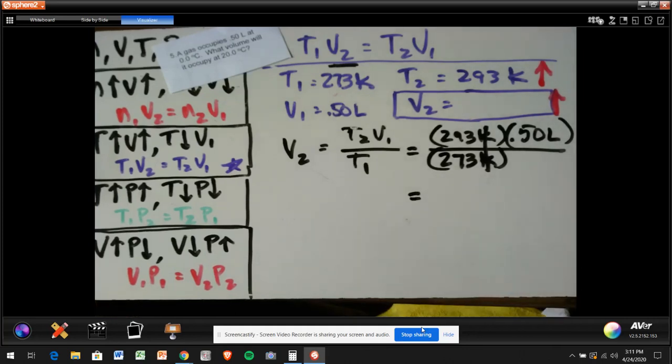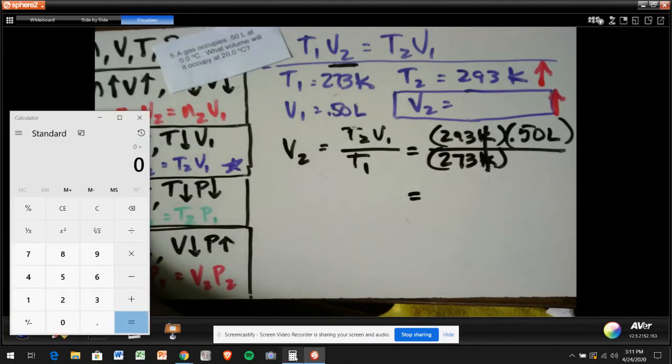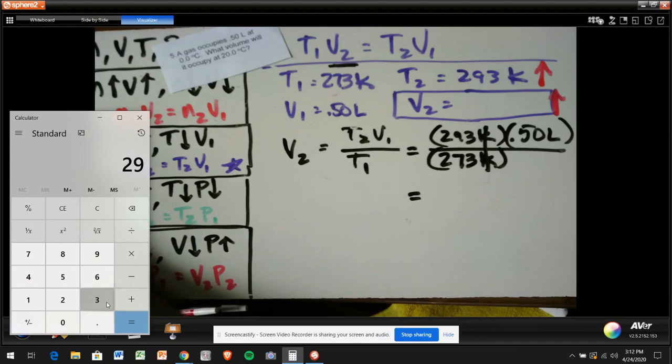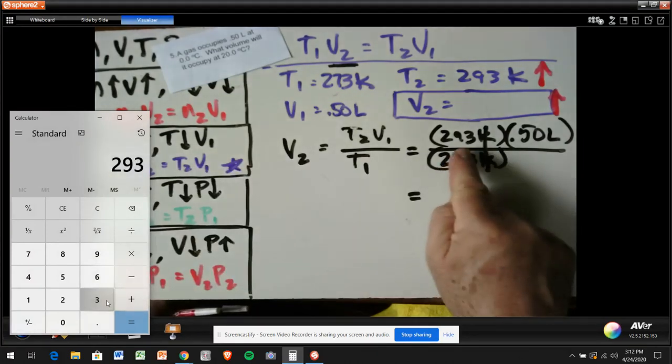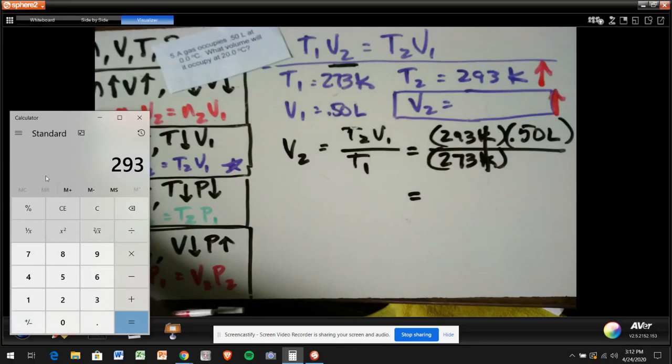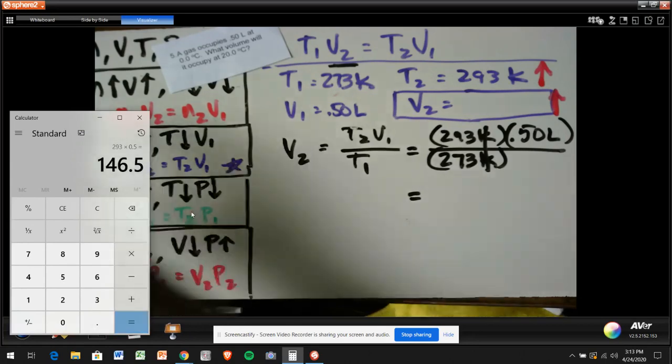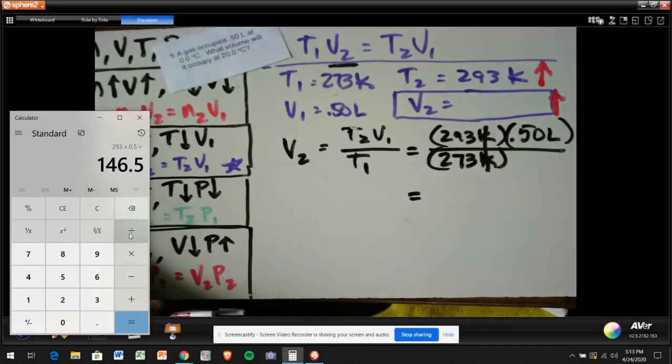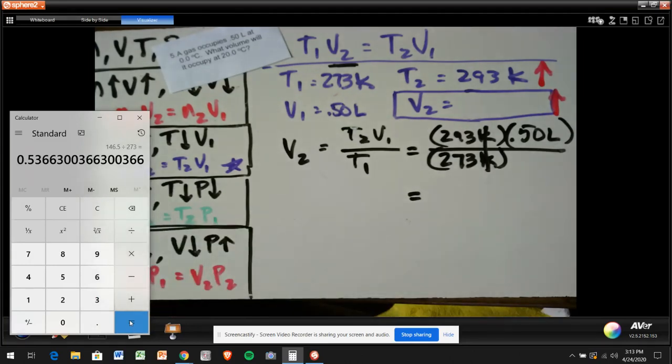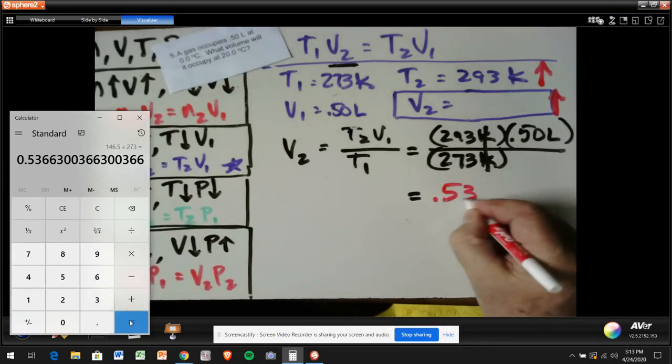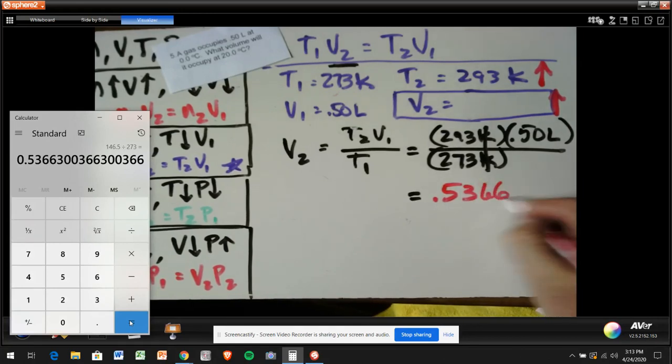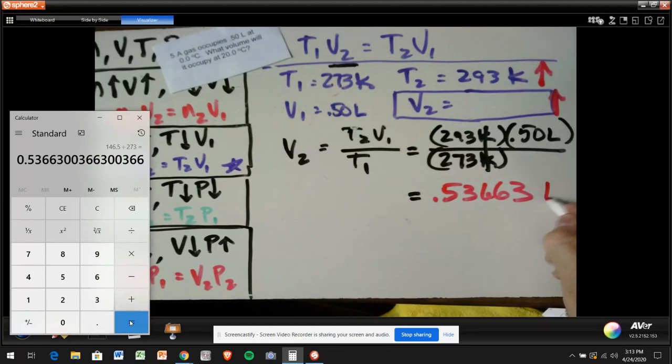And when I do my math, what do I get? Let's see. Pull up the calculator here and make sure I've got it clear. 293 Kelvin times 0.50 liters, times 0.50 liters. And I'm going to take that answer and divide it by 273. So divided by 273 Kelvin equals 0.53663 and so on. And the only unit that's left is liters.